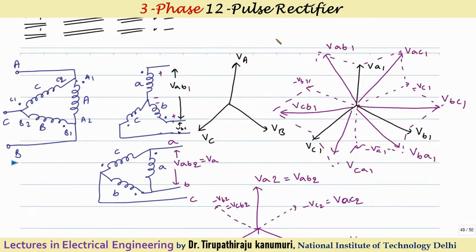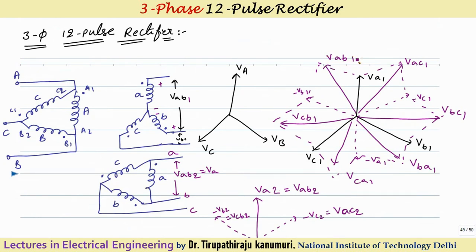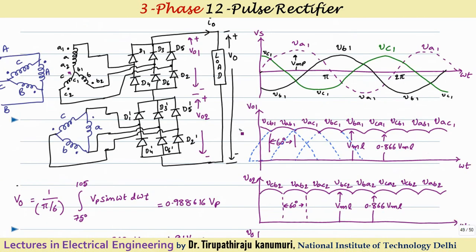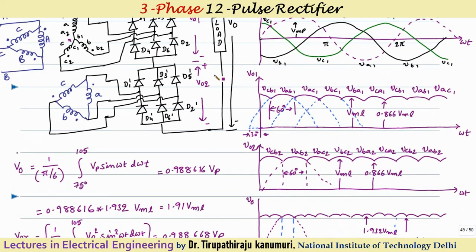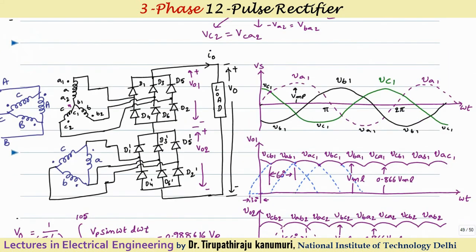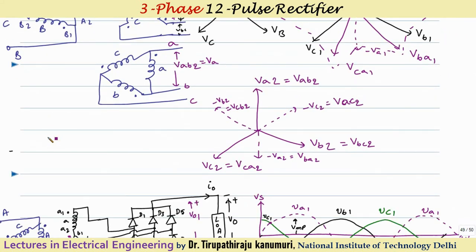The only difference between the two bridge outputs is that the line voltages from the delta secondary are displaced by 30 degrees relative to the star secondary line voltages. In the delta connection case, VAB1 is lagging by 30 degrees in the clockwise direction. So whatever line voltage is shifted by 30 degrees forms the second bridge output. When you shift Vab by 30 degrees, Vab2 is displaced accordingly, and similarly all voltages shift by 30 degrees to produce the second waveform.